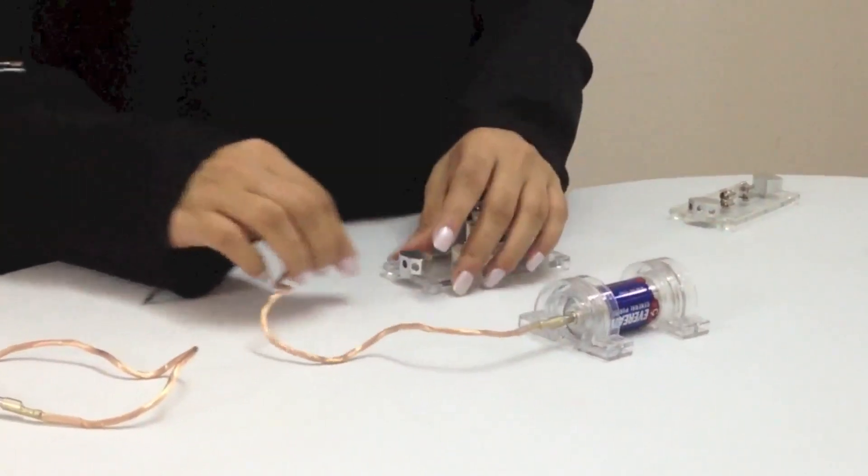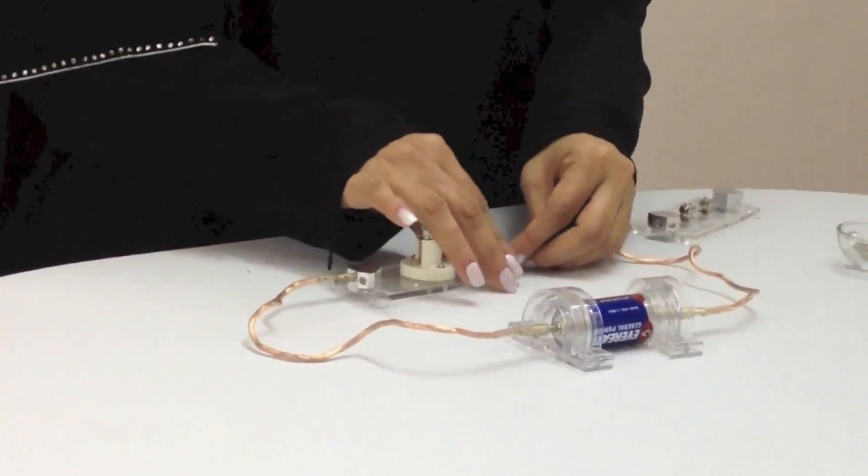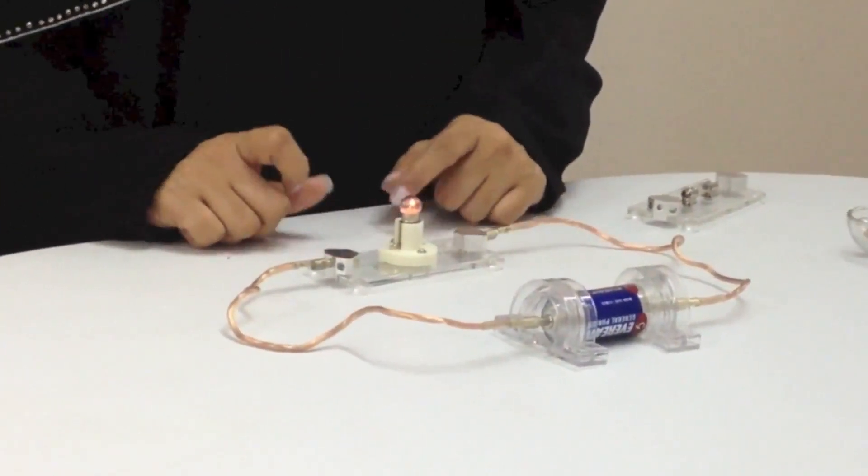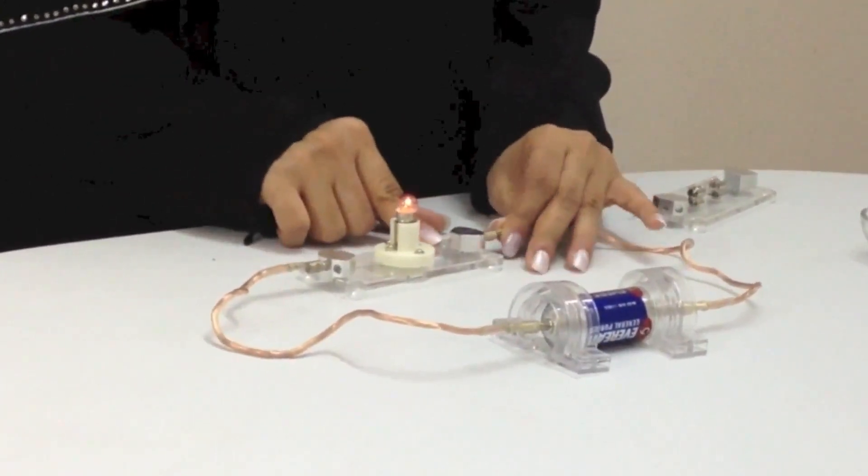I'm using two wires to connect the battery and the bulb together. Because the circuit is complete, the bulb is lit. If I break the circuit, the bulb will stop working.